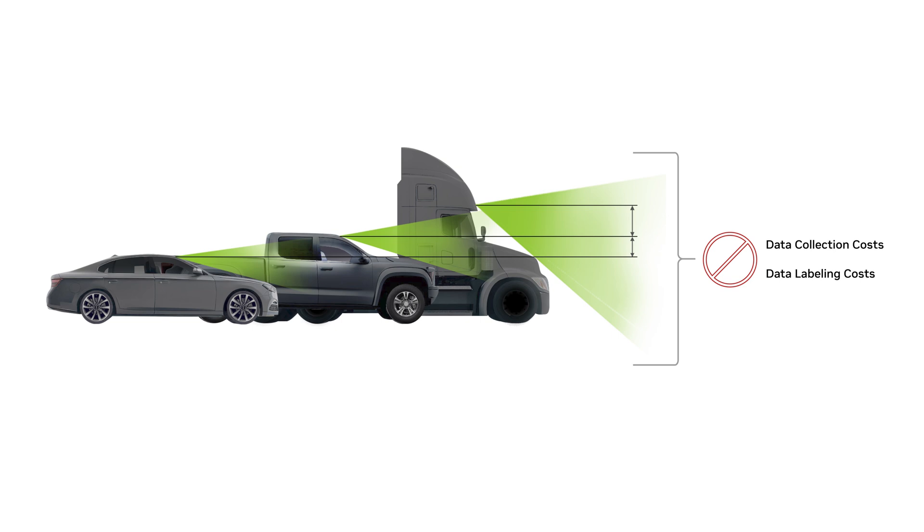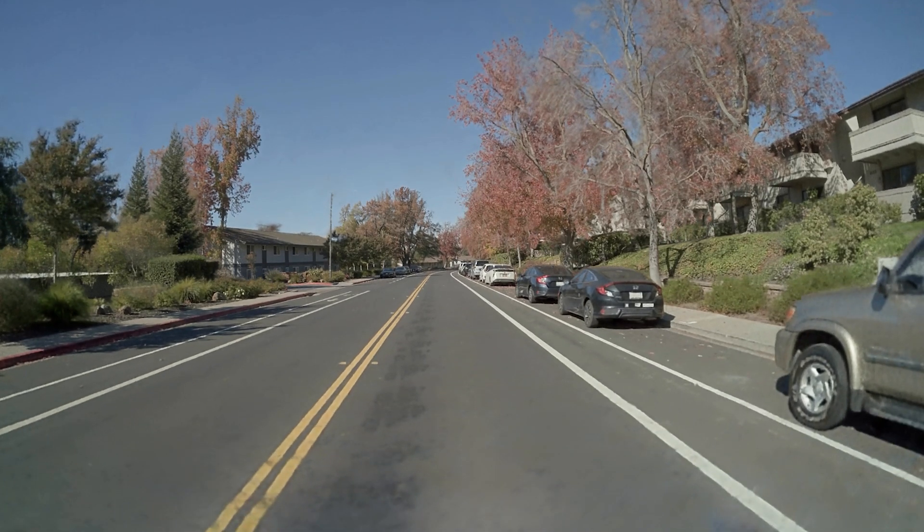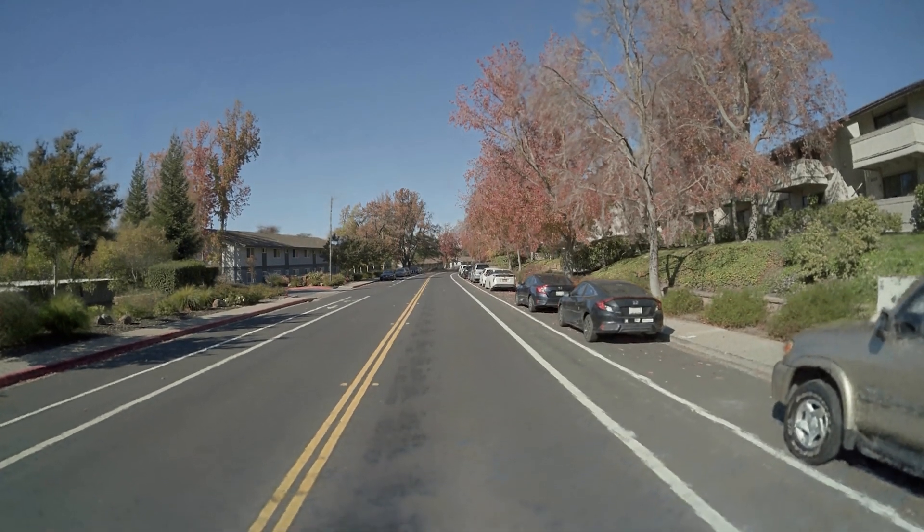As that is not practical, a technique called dynamic view synthesis transforms a sedan's camera data into an SUV's. This eliminates the viewpoint issue, therefore allowing perception models to scale across different vehicle types.